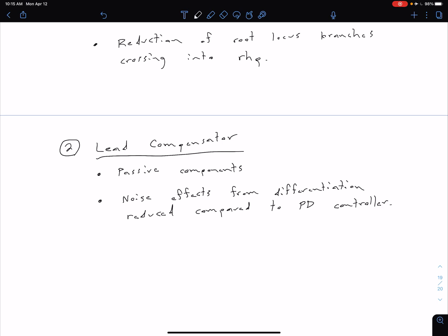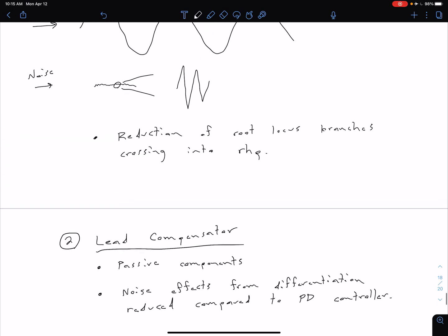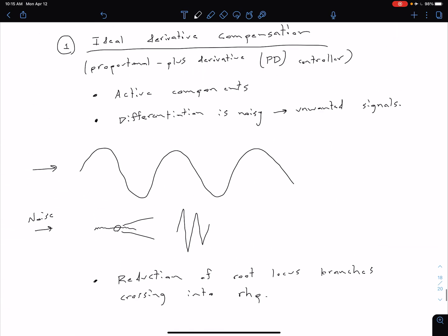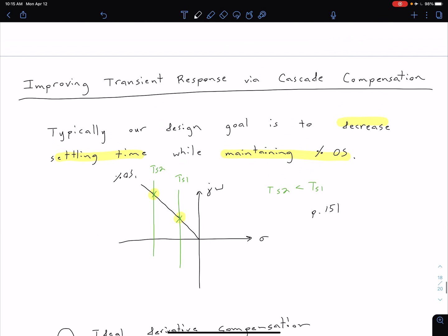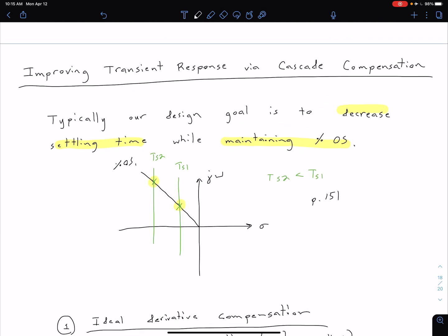Over the following videos, we're going to take a look at examples of each of these types of controllers. One thing to keep in mind as well is that we're only going to have time, at least as of the time of making this video, to consider cascade compensation. But you can look further in your textbook and you can see that we can also improve our transient response or steady state error using feedback compensation.